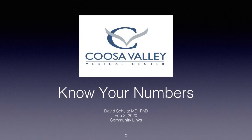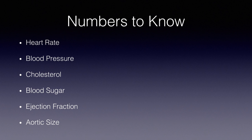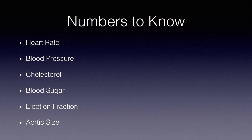I've called it 'Know Your Numbers.' We're going to concentrate on six things: heart rate — what's normal, what's abnormal, when do I need to do something about it — blood pressure, cholesterol, and a particular number important for diabetics. Then two more: ejection fraction, which I think you'll recognize when we talk about it, and what the size of your aorta is supposed to be. Let's start with heart rate.